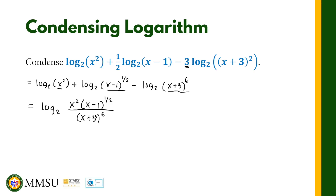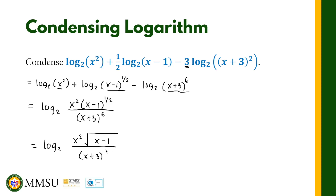This is a good answer, but we can also simplify it further. Since we have a fractional exponent, we can write it as a radical. So the logarithm with base 2 of x squared times the square root of x minus 1, over x plus 3 raised to 6. That is our final answer.